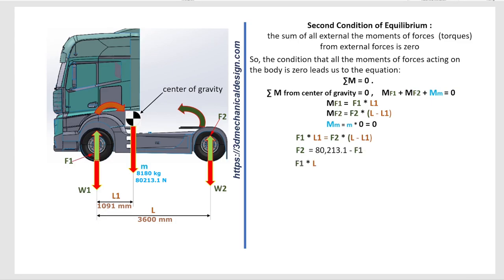F1 times L1 equals 80213.1 minus F1 times L minus L1.